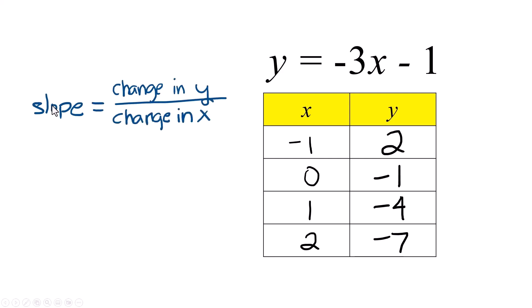Let's calculate the slope for this one. The change in y is going to be negative 3. To get from 2 to negative 1, you have to subtract 3. To go from negative 1 to negative 4, you have to subtract 3. And negative 4 to negative 7, you subtract 3. So our change in y is going down 3 units. Our change in x is still going to be a positive 1. That means our slope is negative 3. And the negative 3 is in the equation right here.